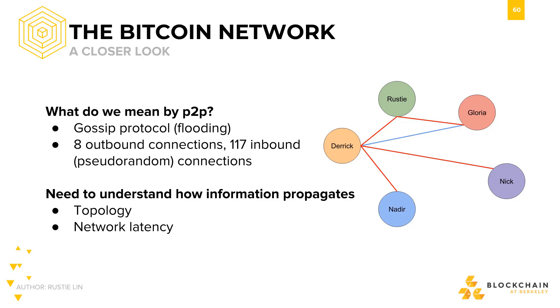Bitcoin allows each node to have a maximum of 125 connections, and generally you have 8 outbound and 117 inbound connections. To further understand how information propagates through the Bitcoin network, we have to understand the network topology and latency.